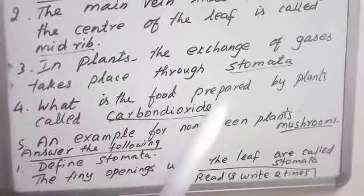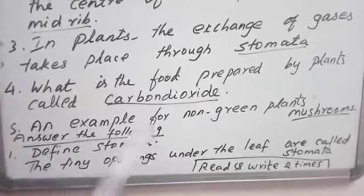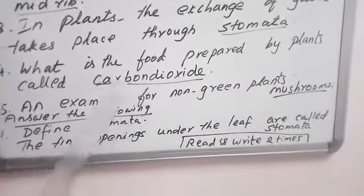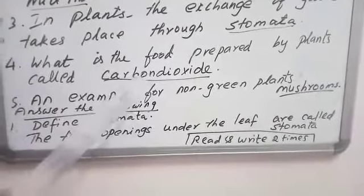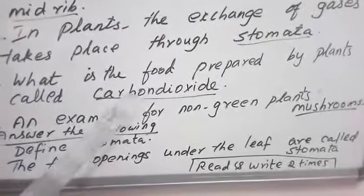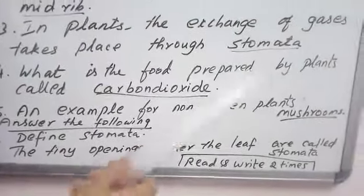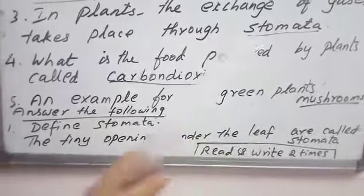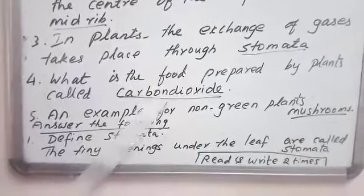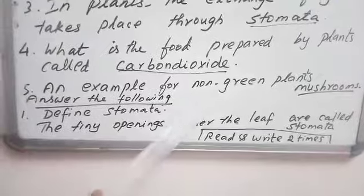So what is the food prepared by plants called? The food prepared by the plant is known as carbon dioxide: C-A-R-B-O-N-D-I-O-X-I-D-E. For humans and animals, it was oxygen — we need oxygen to breathe. For the plant, the food prepared is called carbon dioxide.